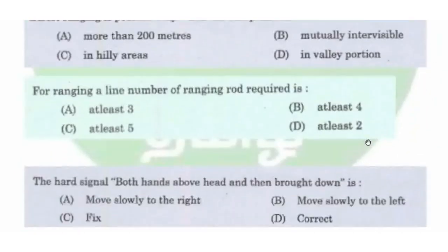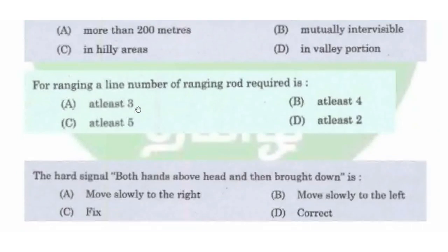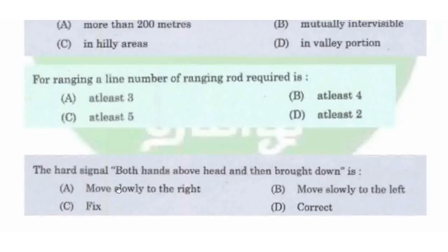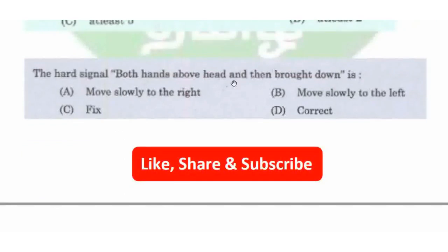For ranging a line, at least 3 ranging rods are required — two at the end stations and one at the intermediate point. The signal 'both hands above head and then brought down' means the point is correct — answer option D.